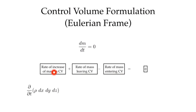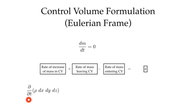Let me first give an expression for the rate of increase of mass in the volume. I want the time rate of change, and I'm using partial derivatives now because we have spatial derivatives as well, but if we're looking at the fixed volume, it's simply the rate of what's changing in time inside that volume. The mass is just the density times the volume, or the density times dx dy dz, and that will give me my first term.